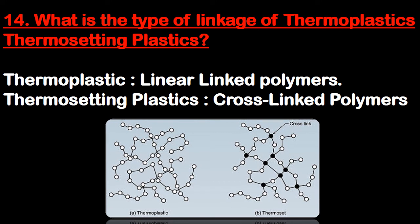Question number 14: what is the type of linkage of thermoplastic and thermosetting plastic? Thermoplastic: linear linked polymer. Thermosetting plastic: cross-linked polymer.